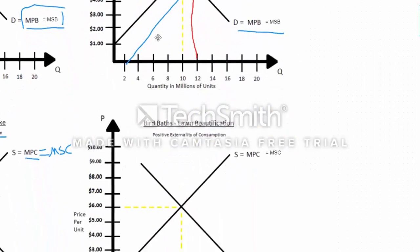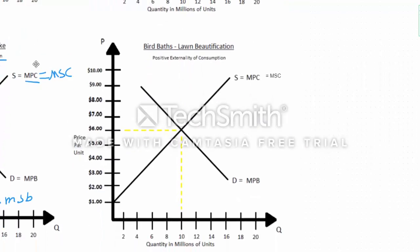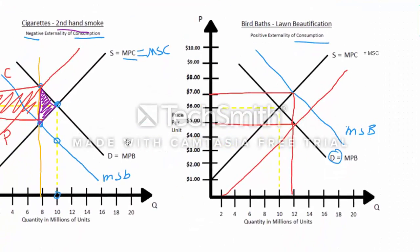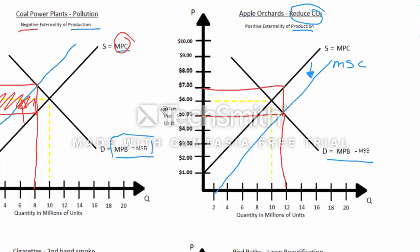Last but not least, birdbaths represent a positive externality of consumption. We're dealing with the demand curve again, and it's positive, so the marginal social benefit is higher than the marginal private benefit. The marginal social cost equals the marginal private cost and stays the same. To correct it, we offer a subsidy to decrease costs to producers — subsidizing the birdbaths because neighbors get some benefit too — moving from 10 million up to 12 million. The key takeaway: for consumption externalities, deal with the demand curve and the disparity between private and social benefits; for production externalities, look at the disparity between private and social costs.